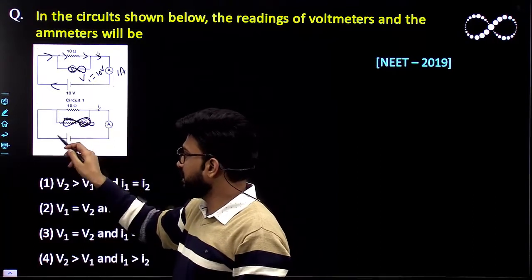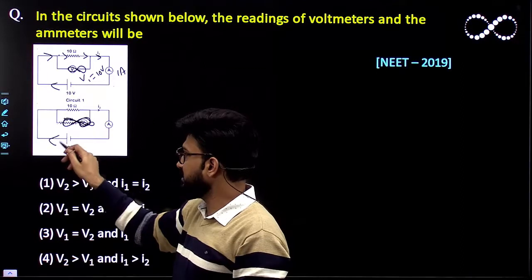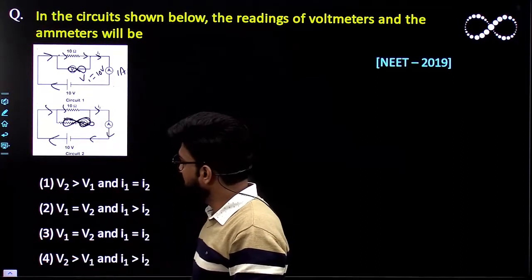So again no current will flow through this circuit, whatever current is coming it will flow just like this. Again the reading would be same.